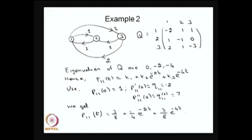Similarly, P₁₂(t) and P₁₃(t) can be found. However, P₁₃(t) does not need to be derived the same way — once P₁₁(t) and P₁₂(t) are known, P₁₃(t) is simply 1 minus those two probabilities, because the summation of probabilities equals 1. This is another way to obtain the time-dependent transition probabilities of being in state j given the system was in state i at time 0.